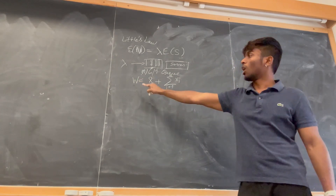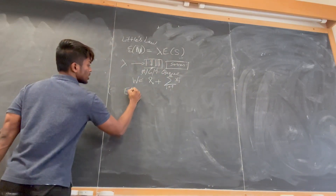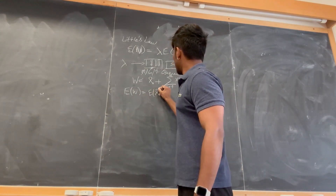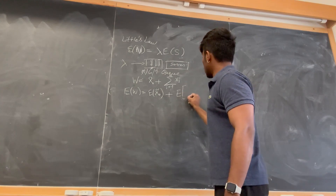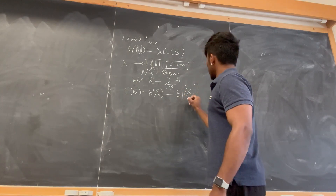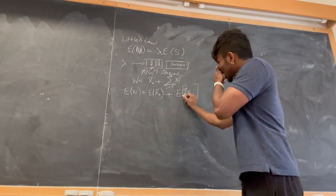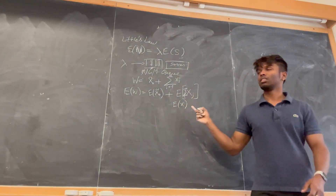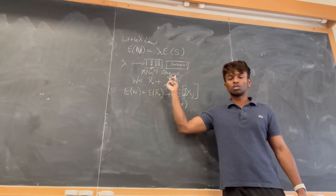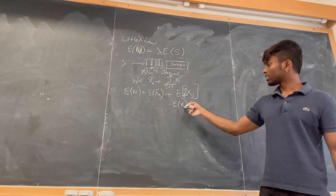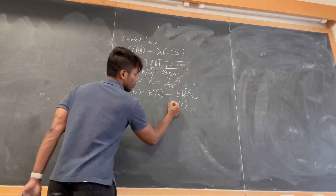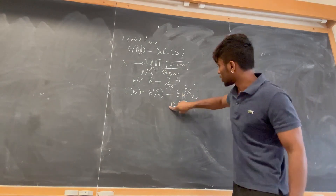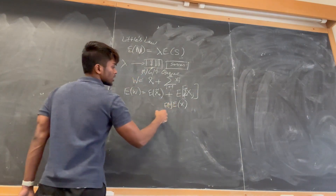To find the mean waiting time, we take the expectation of W. By linearity of expectation, E[W] = E[X0_bar] + expectation of the summation of X_J. Assuming each customer's service time has the same expectation E[X], this becomes E[X] × N. Since N is a random variable, by the law of total expectation, this equals E[N] × E[X].